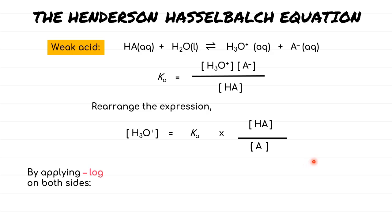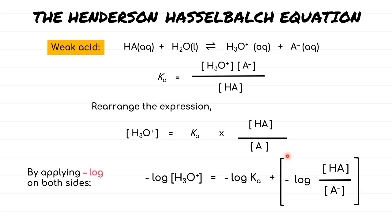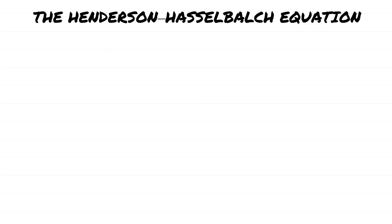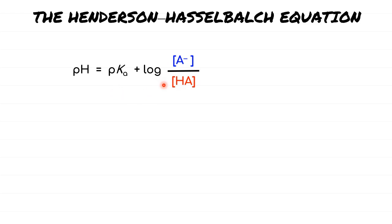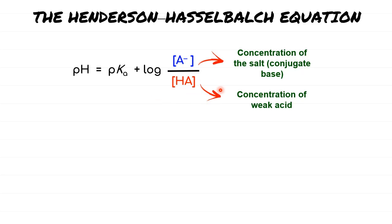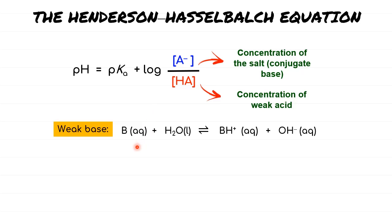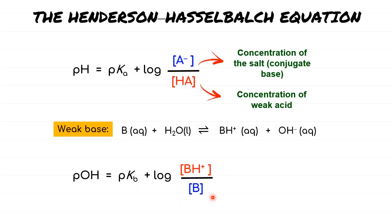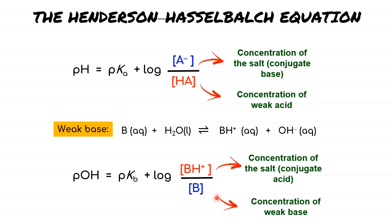On the right-hand side we have Ka times the concentration of weak acid divided by the concentration of its conjugate pair — the conjugate base. Once rearranged, we apply negative log to both sides of the equation. This negative log gives an inverse relationship to the value substituted. Applying negative log changes the symbols: negative log H₃O⁺ becomes pH, and negative log Ka becomes pKa. For the log of concentrations, we swap the conjugate salt to become the numerator and the weak species to become the denominator. For weak base, the Henderson-Hasselbalch equation gives pOH and pKb, with the conjugate acid on the numerator and the weak base on the denominator.